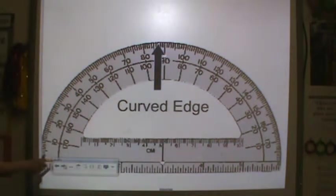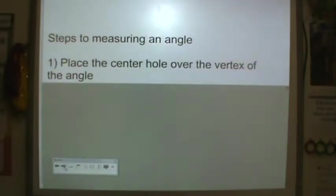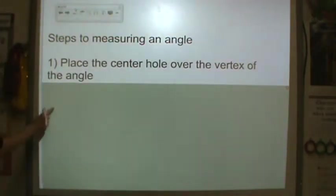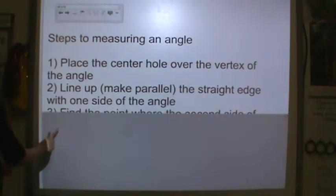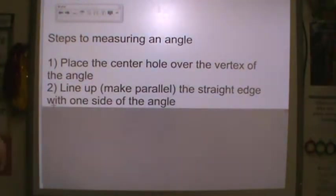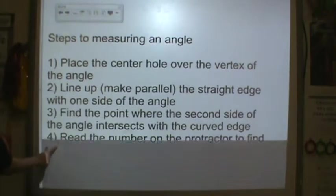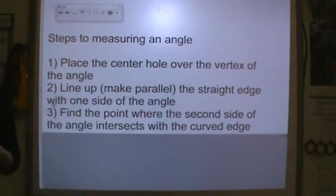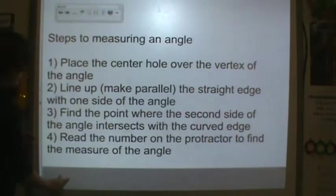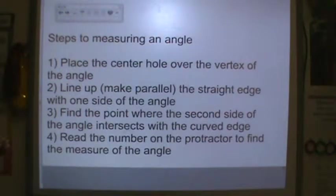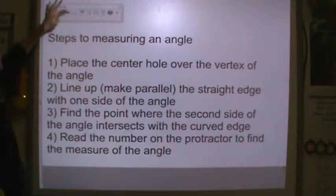Don't worry about drawing any of this. I'll have one for you at school. Here are some steps to measuring an angle. First, you place the center hole over the vertex. You line up the straight edge with one side of the angle. You find where the second side intersects the curved edge, and you read the number on the protractor to find the measure of the angle. We're going to practice this at school. I just need you to have the directions in your notes for tomorrow.